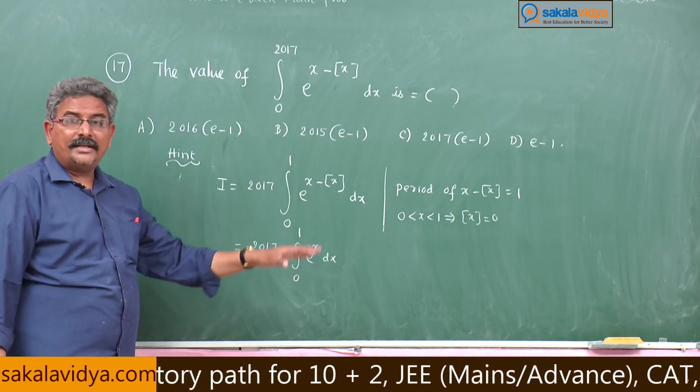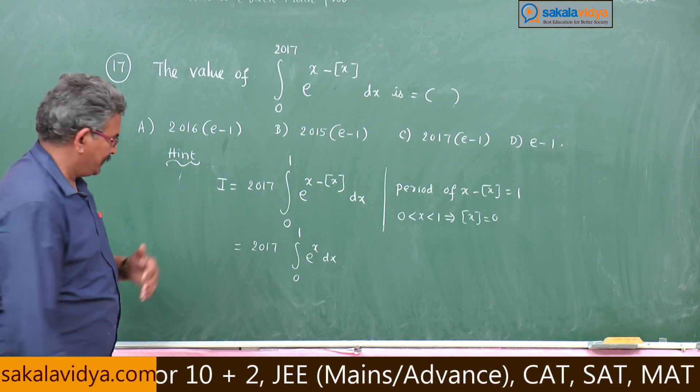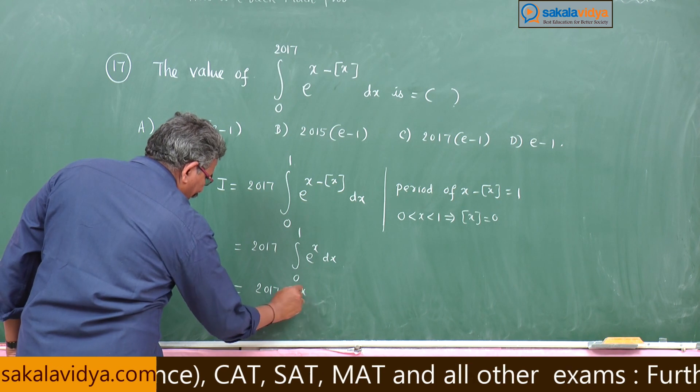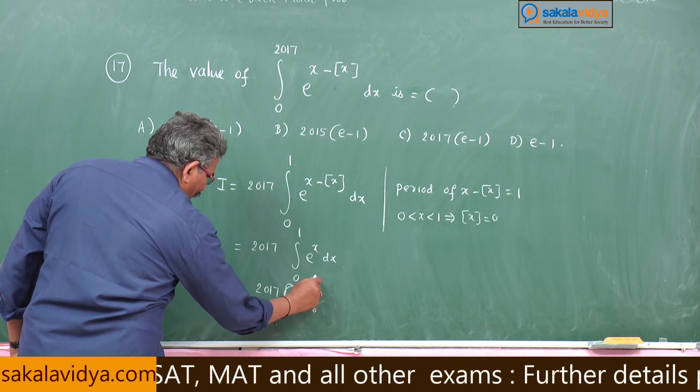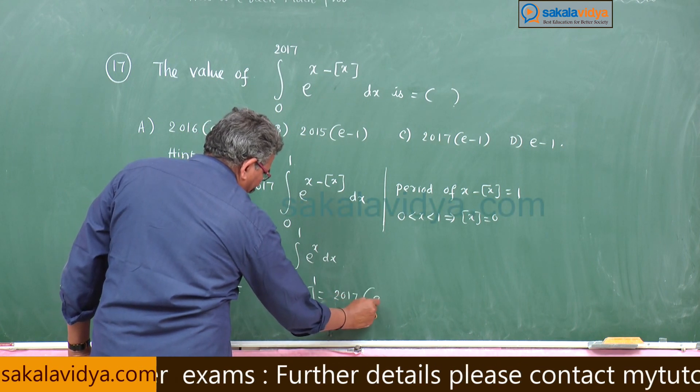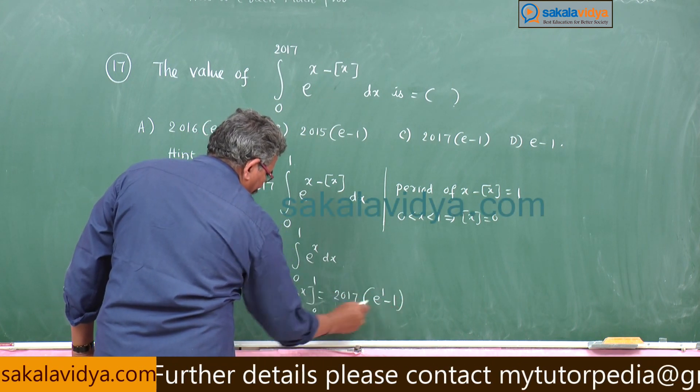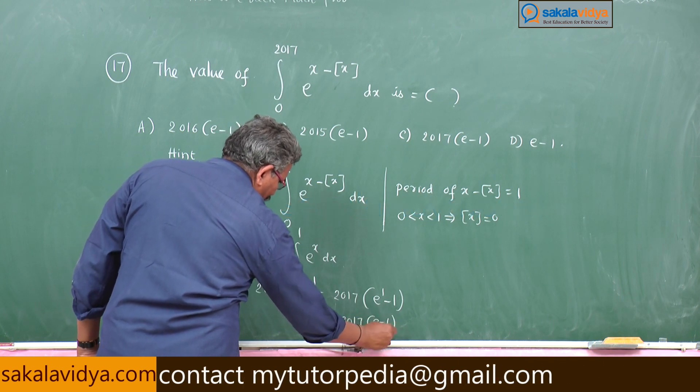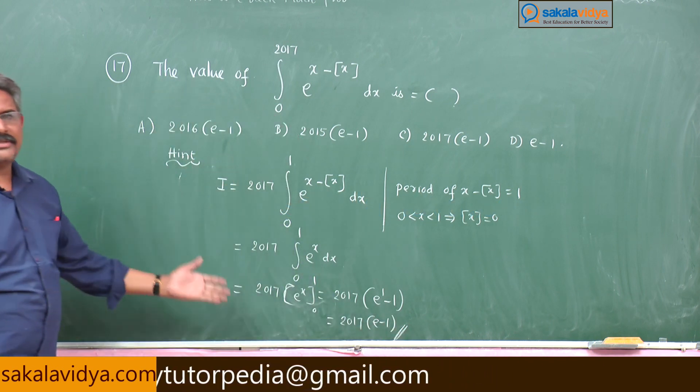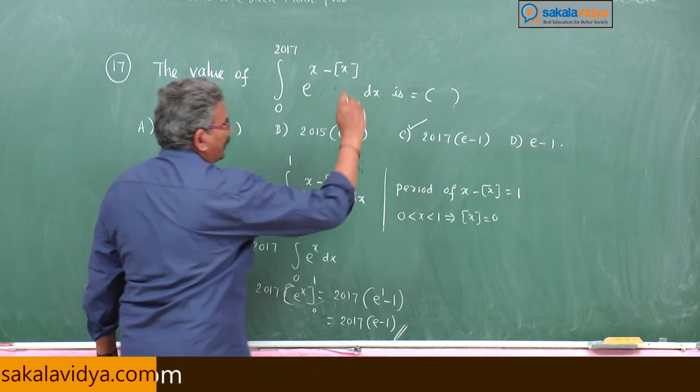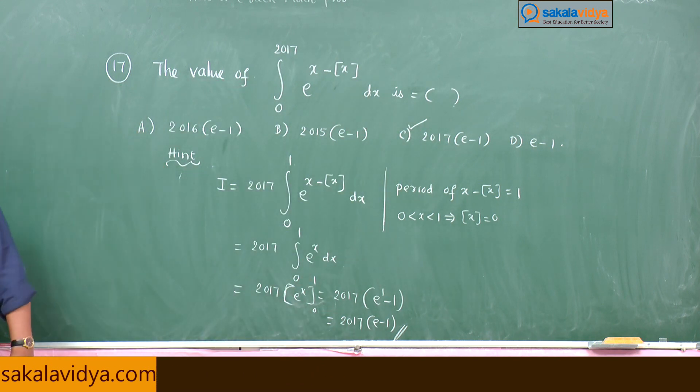What is the integral of e^x? It's e^x. So we have 2017 times [e^x] from 0 to 1, which equals 2017(e^1 - e^0), which equals 2017(e - 1). This is the answer. Option C is the correct one.